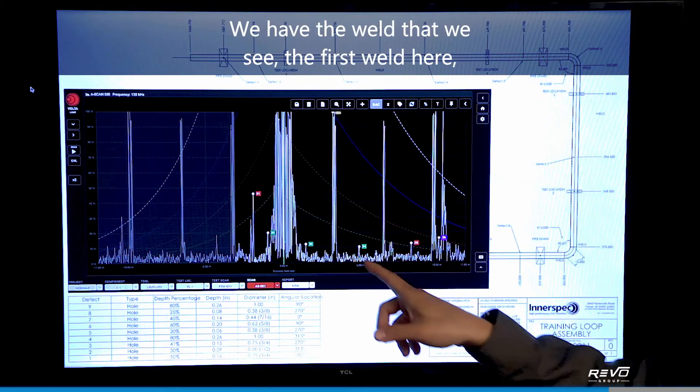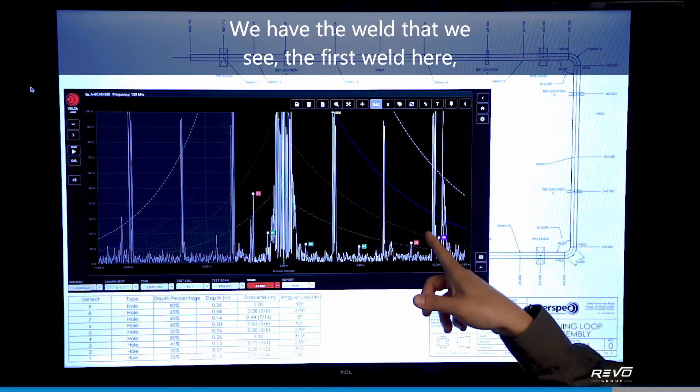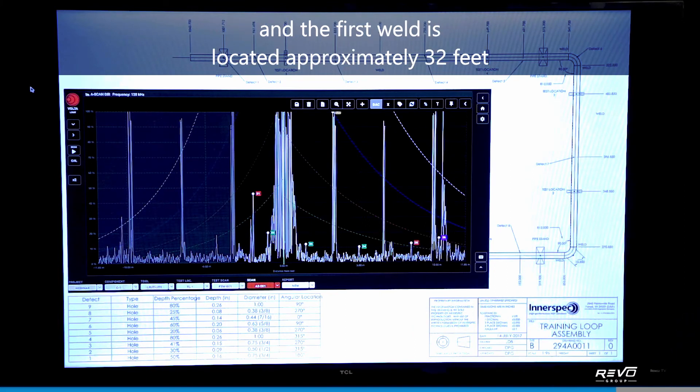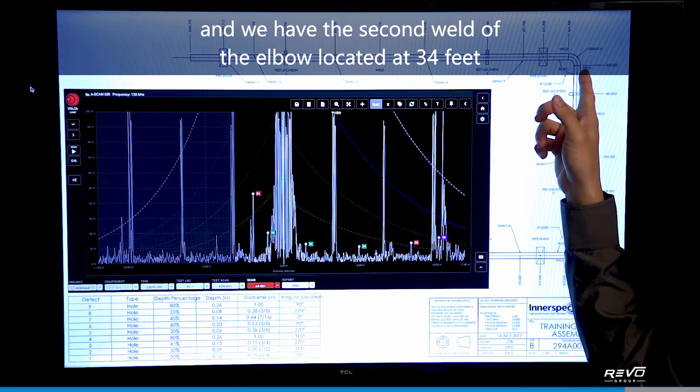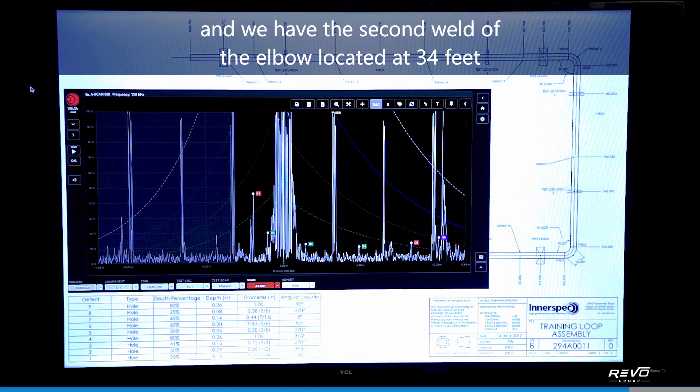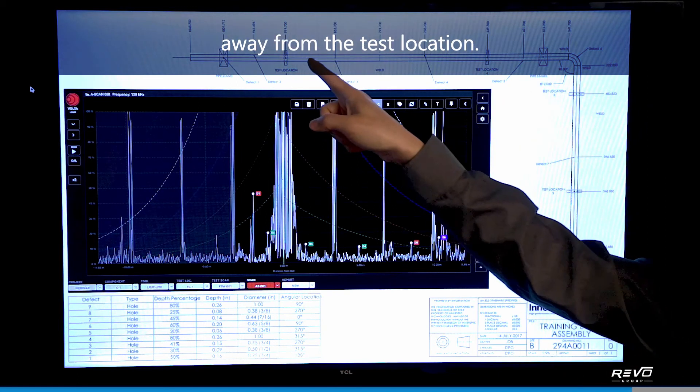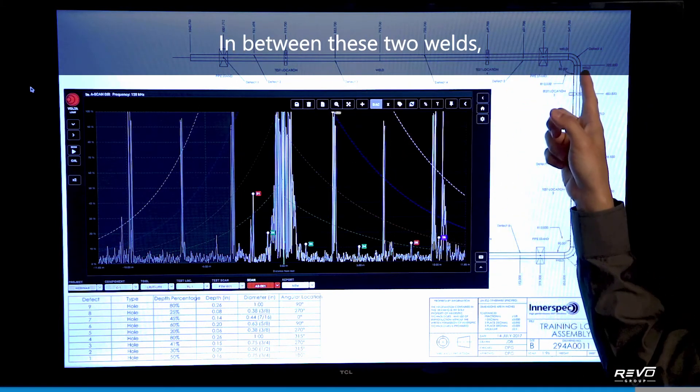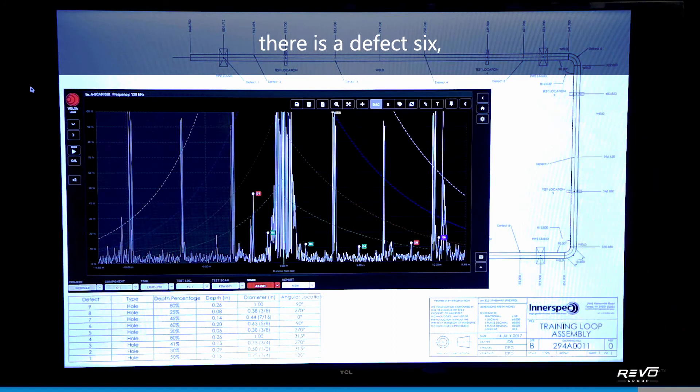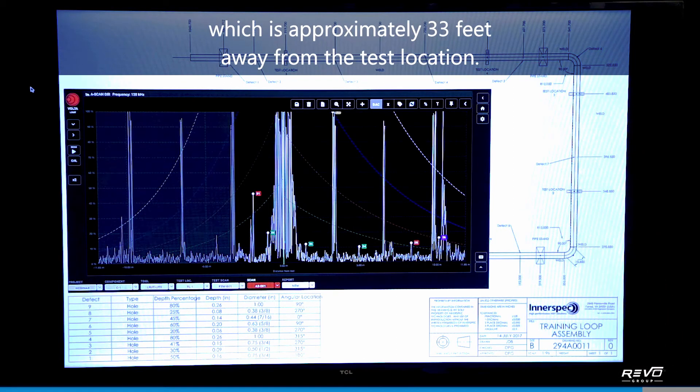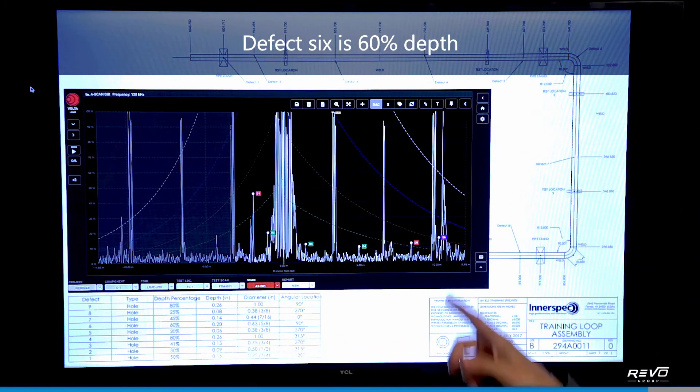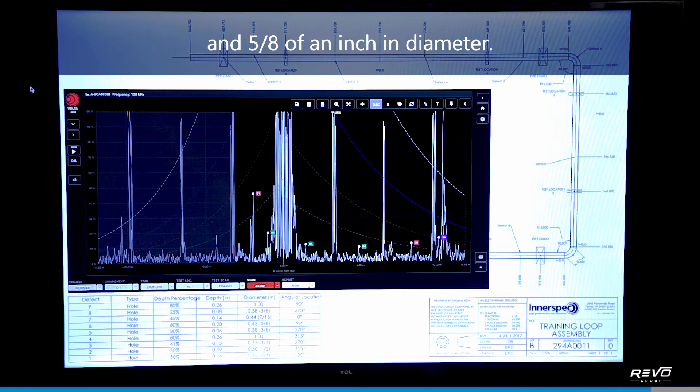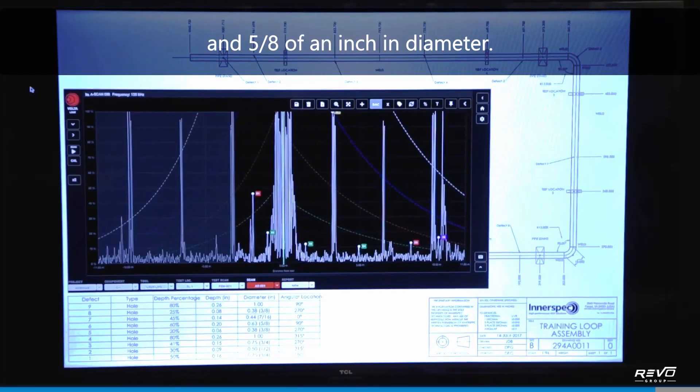We have the weld that we see, the first weld here, and the first weld is located approximately 32 feet away from the test location and we have the second weld of the elbow located at 34 feet away from the test location. In between these two welds there is a defect 6 which is approximately 33 feet away from the test location, defect 6 is 60% depth and 5 eighths of an inch in diameter.